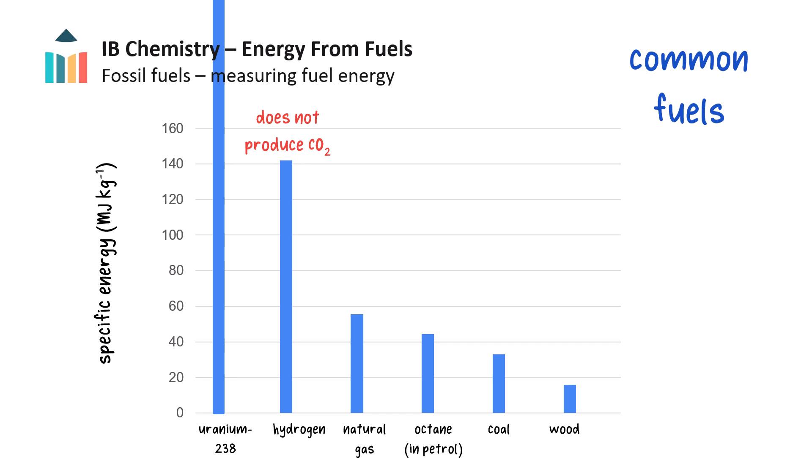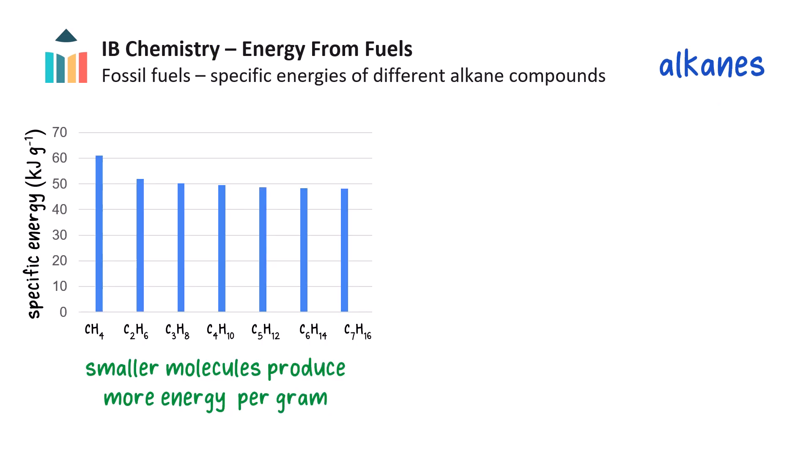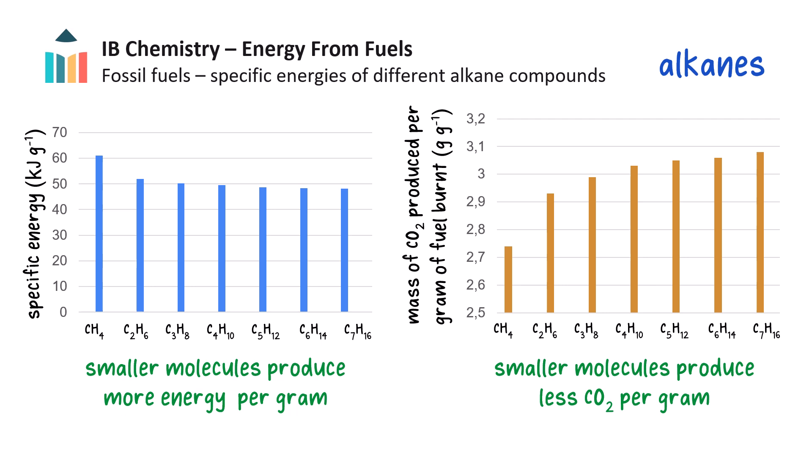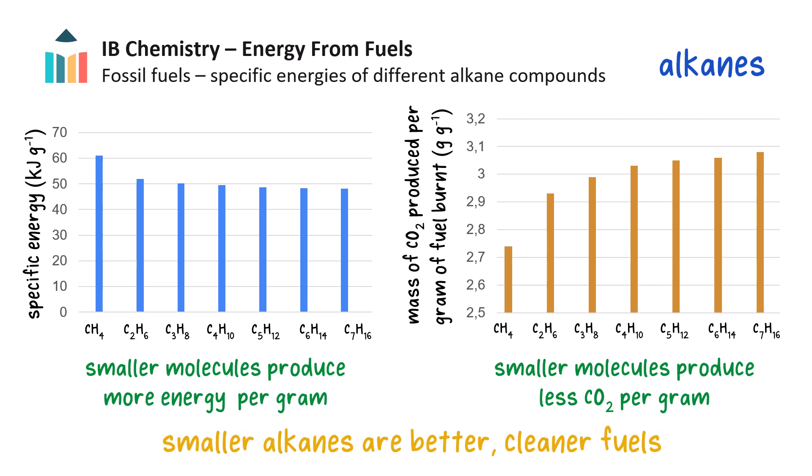Wood has the lowest specific energy, releasing the least energy per unit mass. A similar graph comparing different alkanes specifically shows that smaller molecules with fewer carbon atoms have higher specific energy, meaning smaller alkanes provide more energy per unit mass. A graph showing the mass of carbon dioxide produced per gram of fuel shows that smaller alkane molecules release less carbon dioxide. Larger alkanes tend to release more carbon dioxide and also tend to combust incompletely, so we can conclude that smaller alkanes are better, cleaner fuels.